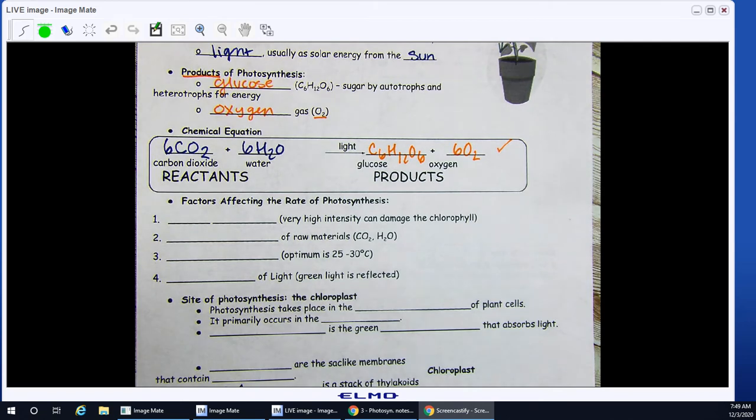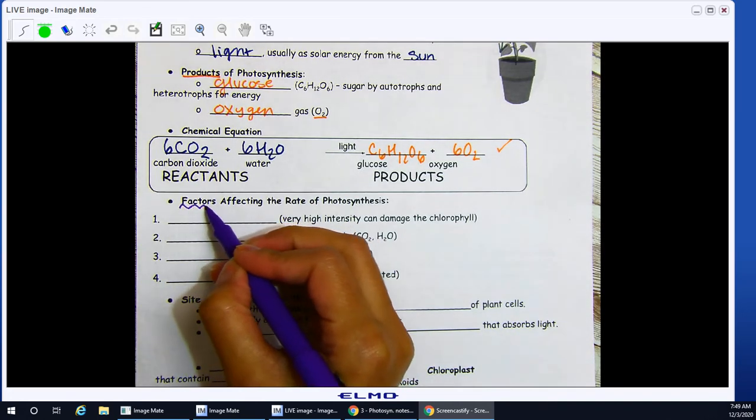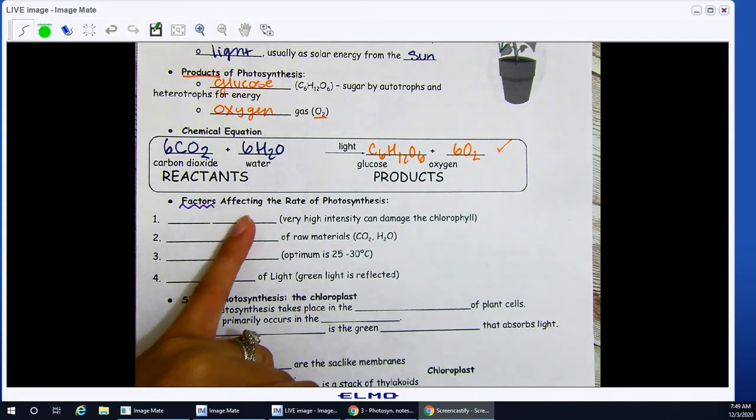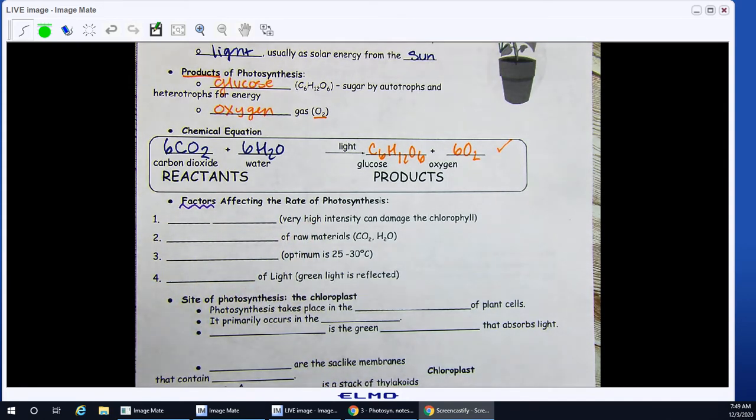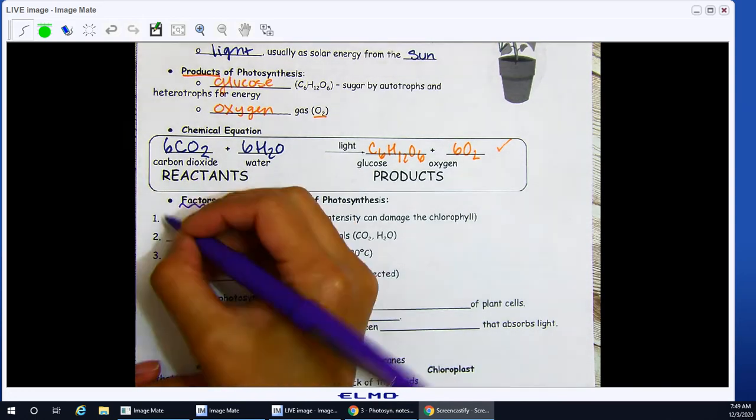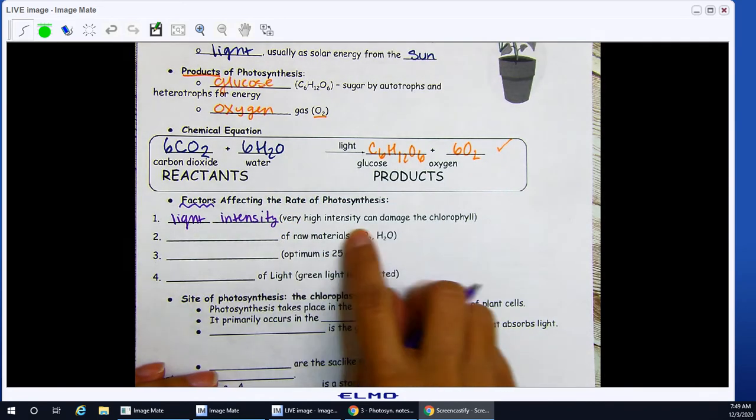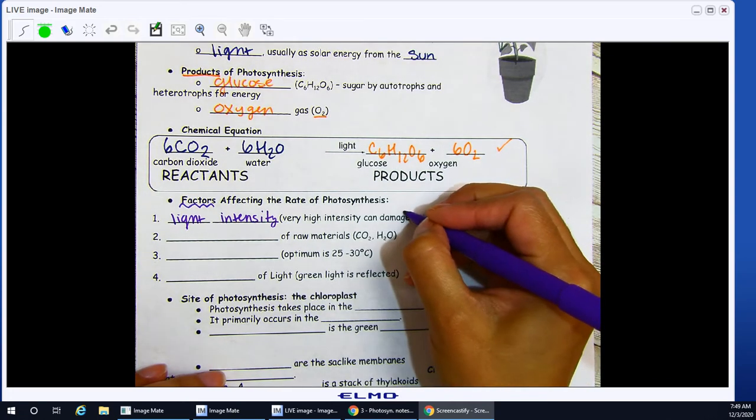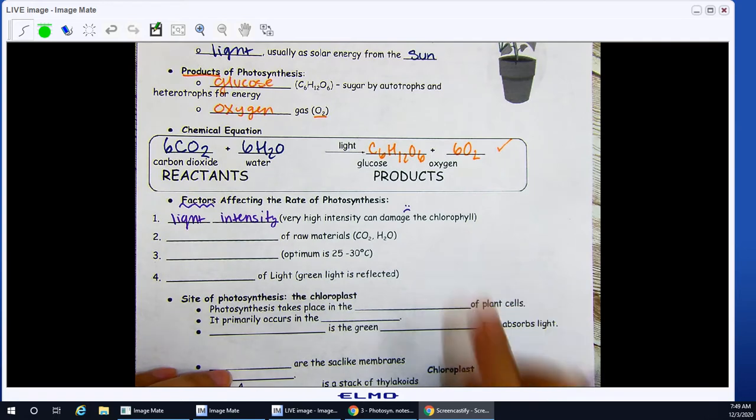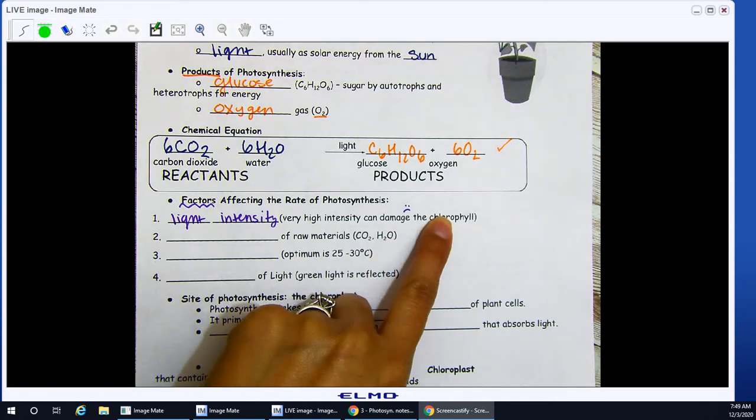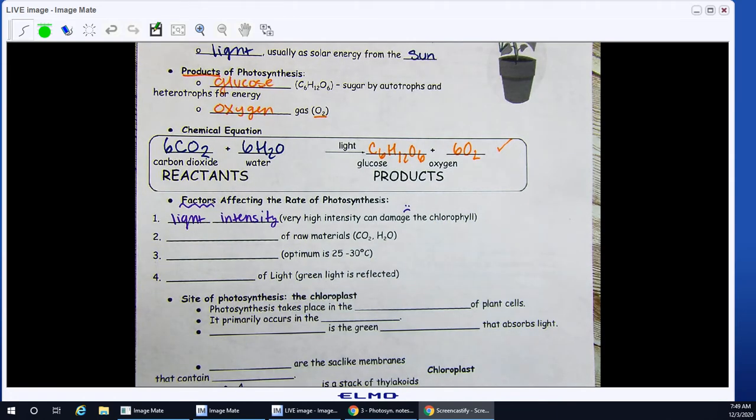We're moving forward. Factors affecting the rate of photosynthesis. So what is this talking about? Factors. These are any things, environmental-wise, around in their particular area affecting the rate. Either how fast or slow photosynthesis is able to happen. Light intensity is your first one. Very high intensity can damage. Damage the chlorophyll. So if you leave a plant or an autotrophic organism in direct intense light for an extended amount of time, you can damage your chlorophyll, and this is going to slow down your rate of photosynthesis.